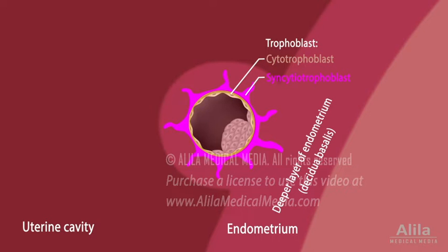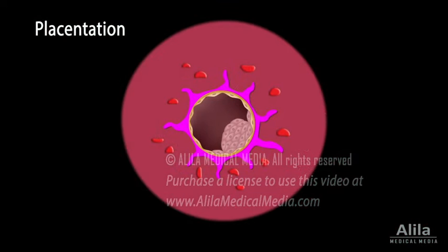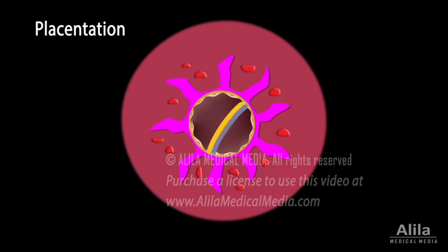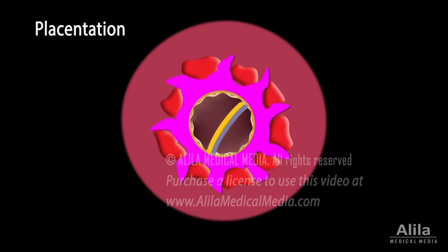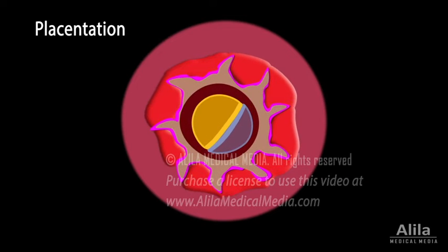Basically, in week 2, the superficial layer of the trophoblast, the syncytiotrophoblast, invades and digests the nearby endometrial tissue, while maternal capillaries at the implantation site begin to dilate, forming sinusoids. As these events continue, maternal blood vessels surrounding the embryo are slowly dissolved. The deeper layer of the trophoblast, the cytotrophoblast, then invades the syncytiotrophoblast to form the primary chorionic villi.